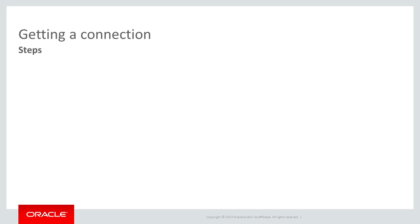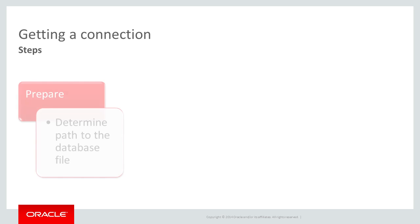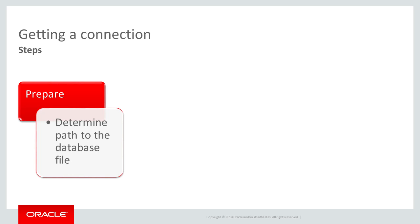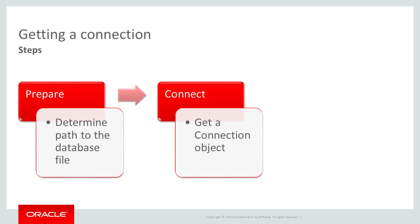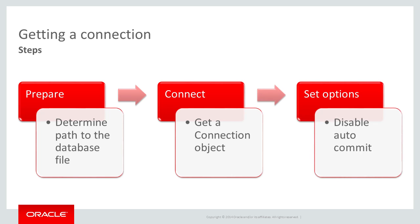Getting a JDBC connection in MAF is straightforward — there are three main steps. First, prepare: SQLite databases are files, and we need to obtain the path to this file using classes provided by MAF. Second, connect: to interact with the database, we need a valid JDBC connection object, using the path obtained in step one. Finally, set options: some default behaviors of JDBC connections are not necessarily desirable. I recommend, for example, turning off autocommit in order to improve performance and make application behavior more predictable.